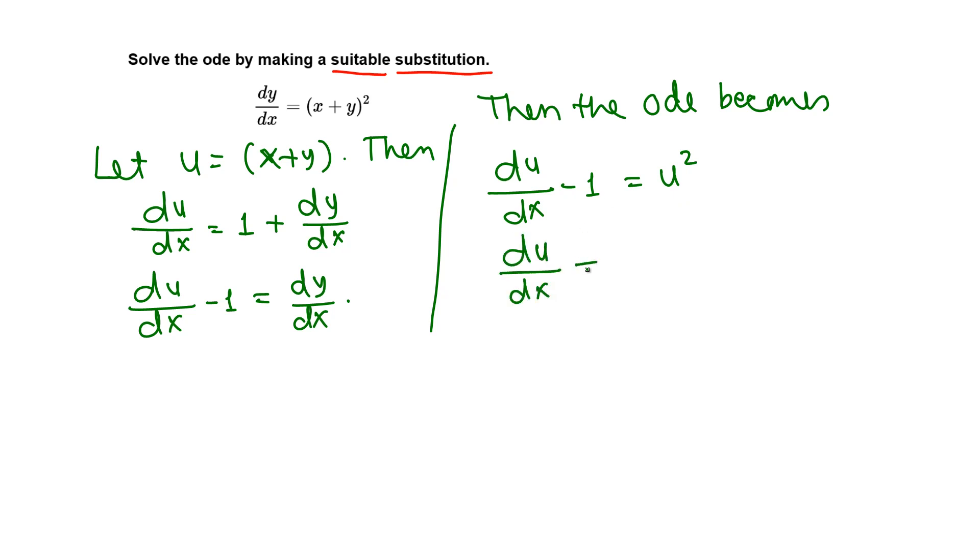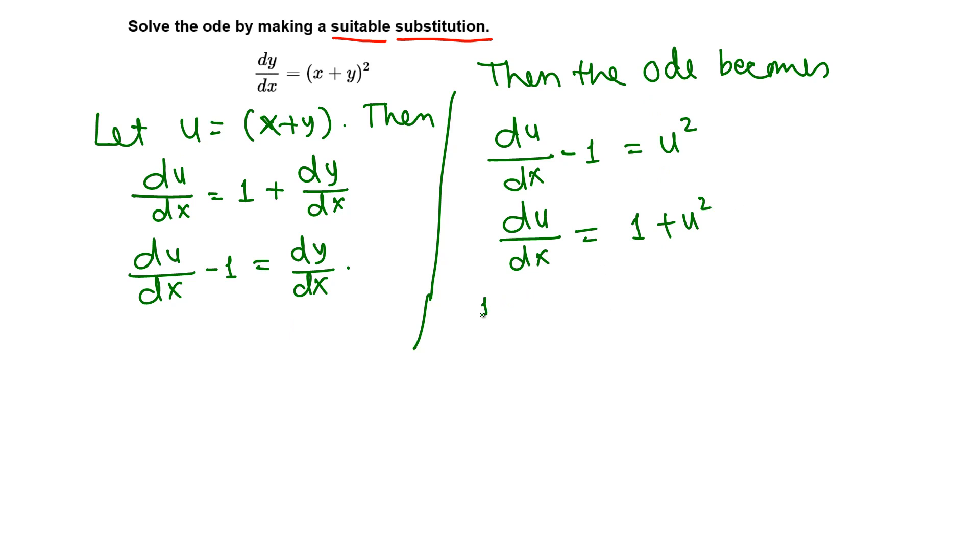Add 1 to both sides, so 1 + u². Now let's separate the variables. 1 + u² on the left side, that means 1 over (1 + u²) du equals dx.